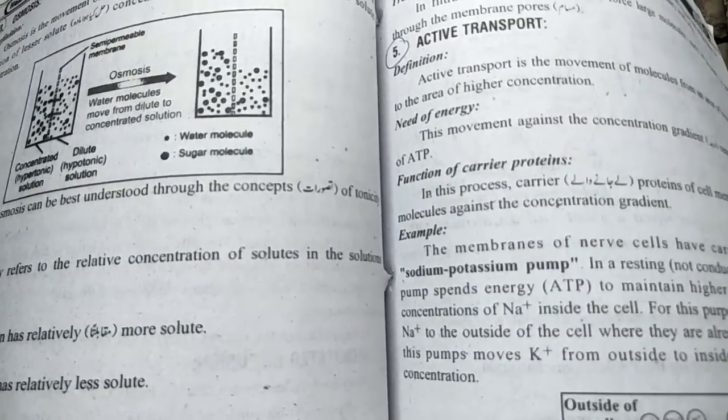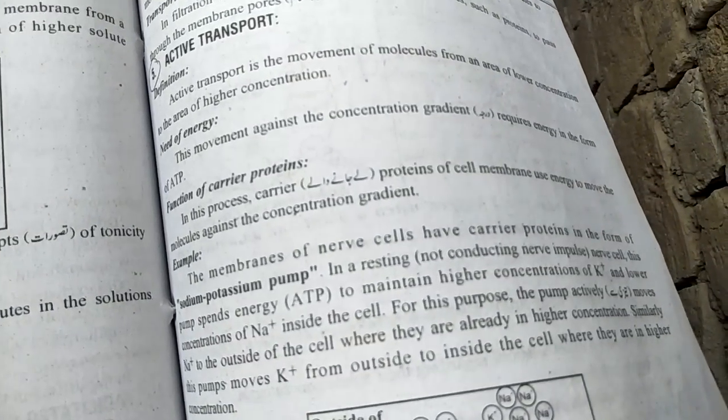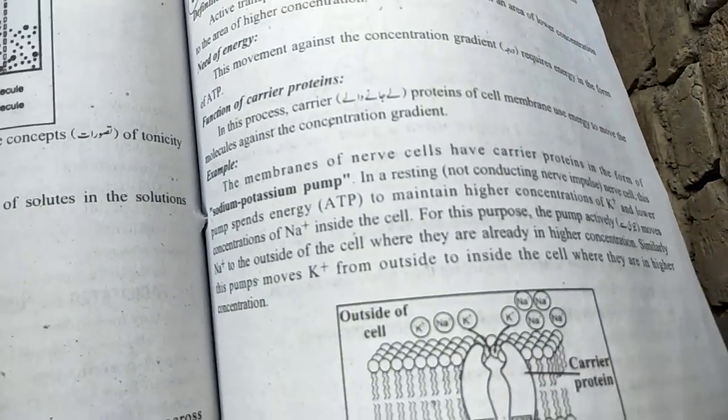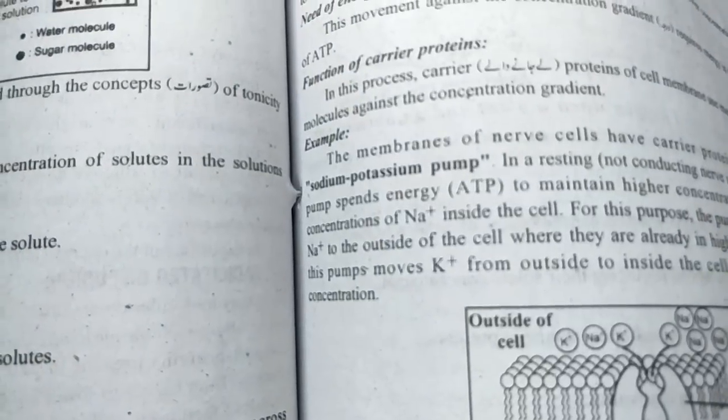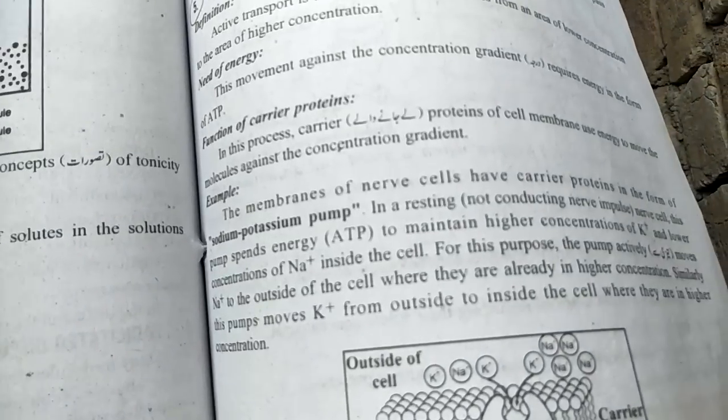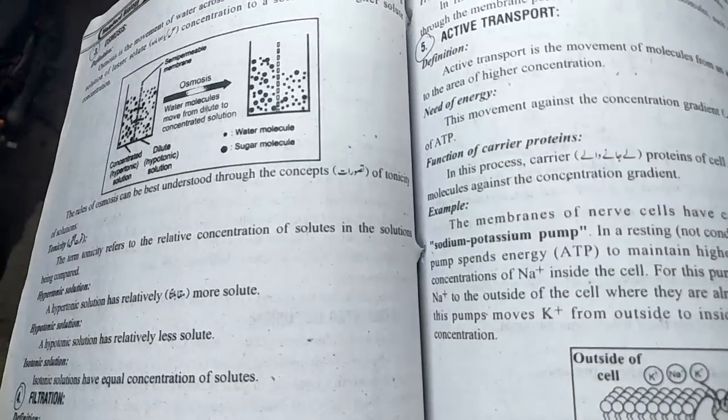This movement against the concentration gradient requires energy in the form of ATP. Functions of carrier proteins: Carrier proteins of the cell membrane use energy to move molecules against the concentration gradient.